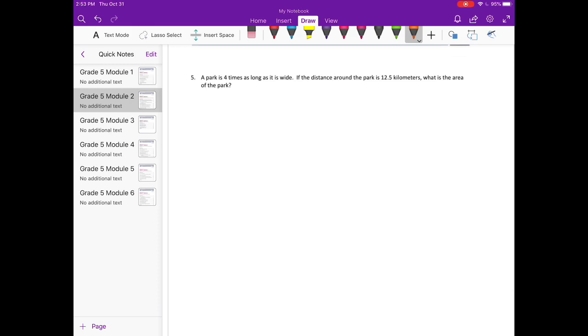Number 5. A park is 4 times as long as it is wide. If the distance around the park is 12 and 5 tenths kilometers, what is the area? So let's try and visualize this. Here's the park. It's 4 times as long as it is wide. So if it was 1 inch wide, it would be 4 inches long. And the distance around the park, otherwise known as the perimeter, is 12 and 5 tenths kilometers. So if this is also 4 times and this, all of that would add up to 12 and 5 tenths. But we don't know what these lengths actually are.